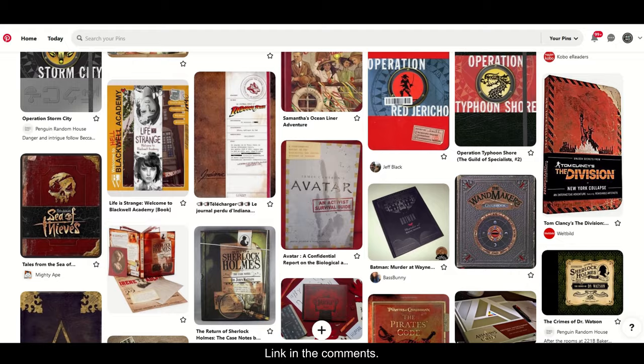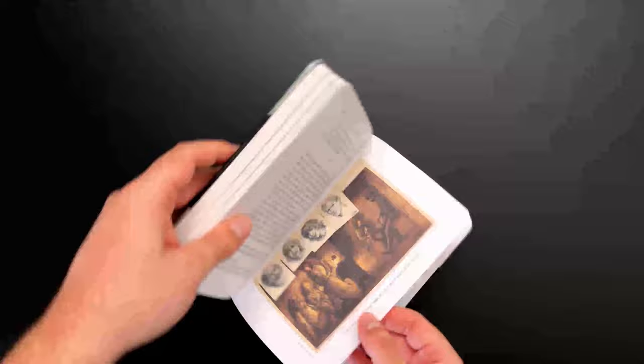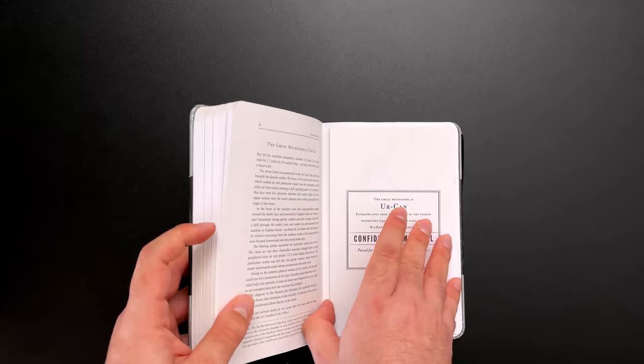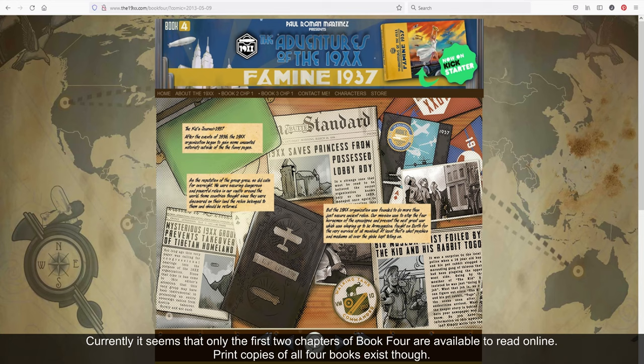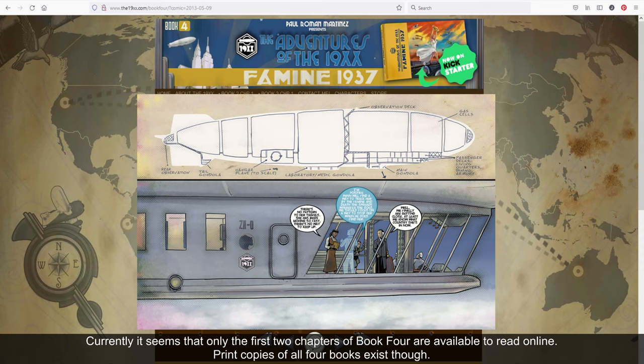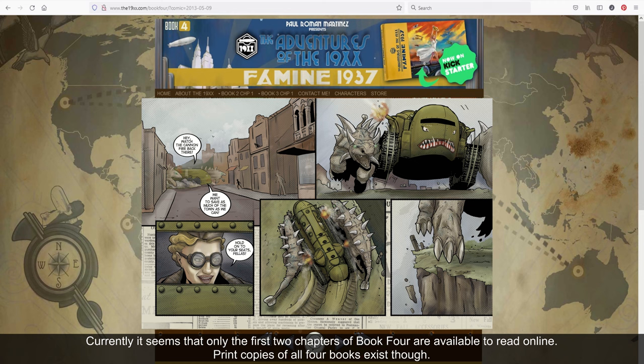But for further reading in terms of themes and genre and story, I mean, there's loads, and I already mentioned Tintin, but I think the thing that reminds me most of the Guild Trilogy that I'd like to single out is definitely a free webcomic called The Adventures of the 19XX. So if you like either the Guild Trilogy or the 19XX comic, there's a very good chance you'll like the other. It's well worth checking out if you're a fan of the style of early 20th century globe-trotting pulp adventures.